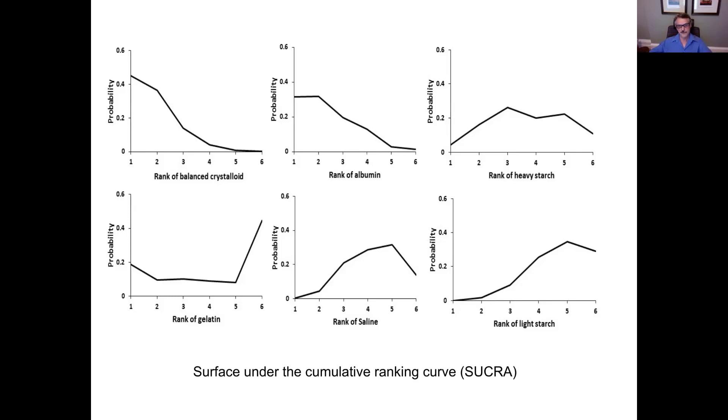What the SUCRA is, is a single number that captures what's on this slide. So, you can sort of think of it as an area under the curve, and it gives a single number that captures the likelihood for each treatment of being 1st, 2nd, 3rd, 4th, 5th, or 6th.